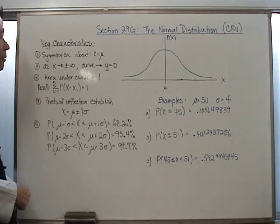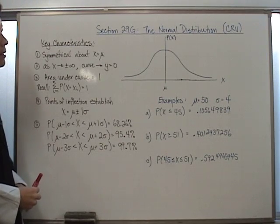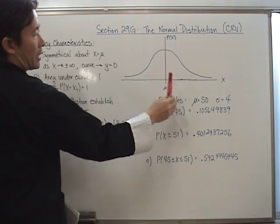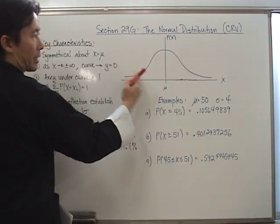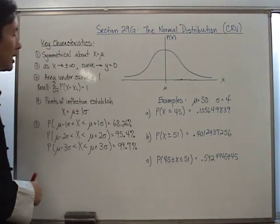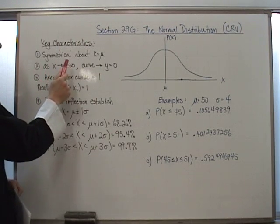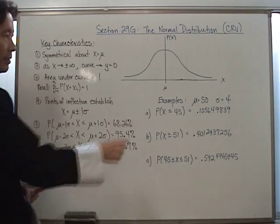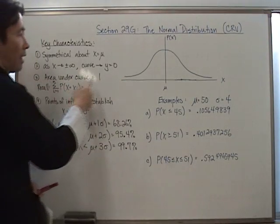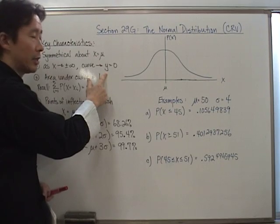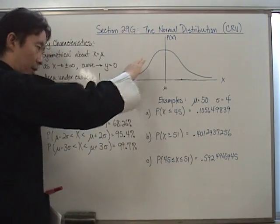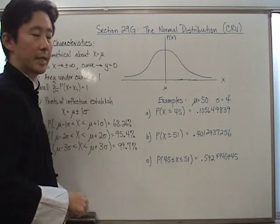Key characteristic number one: it is symmetrical about x equals the mean. If we look at x equals the mean right here, this part is a mirror reflection of this part, so x equals the mean acts like a mirror line. Number two: as x approaches positive or negative infinity — as x goes further and further out in either direction — the curve gets closer and closer to y equals zero, which is the x-axis. It never touches the x-axis.